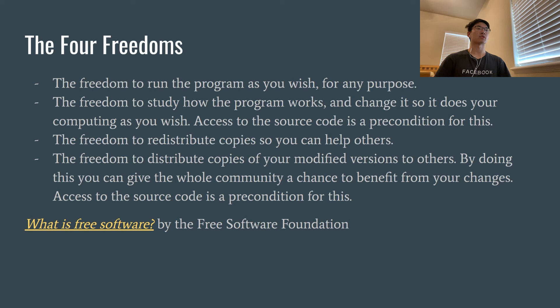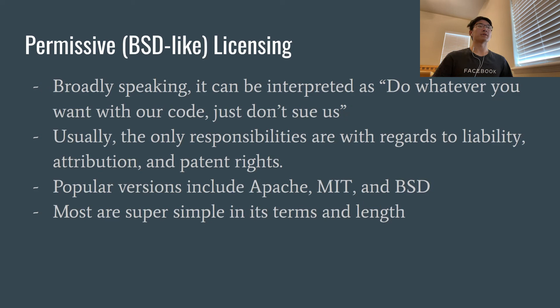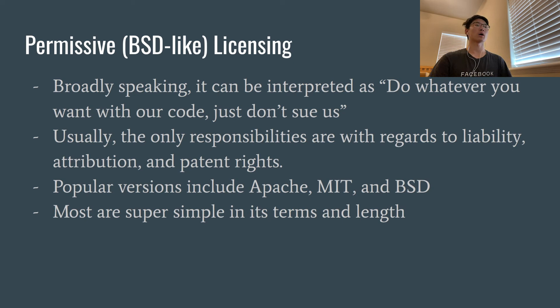A very common license on GitHub repositories today is the MIT license. It's a permissive, simple license that essentially says: you can use our code, but don't sue us and respect our patent rights. That's about it. The simplicity of this license is part of why it's so popular — it really just says 'this is open source' and leaves it at that.